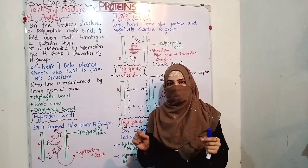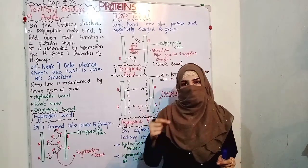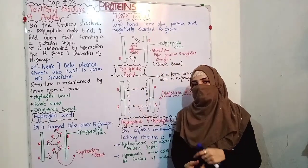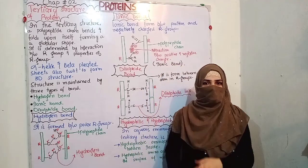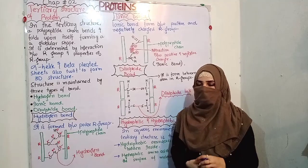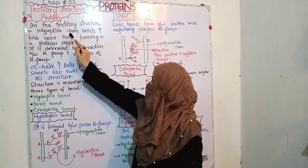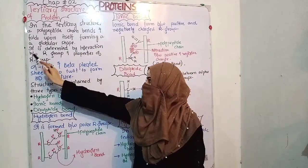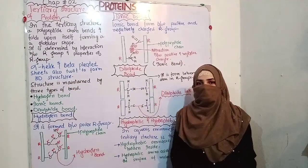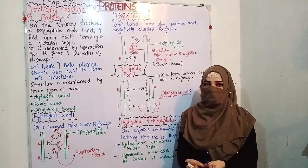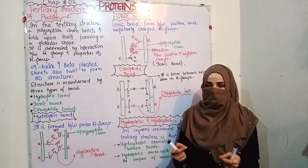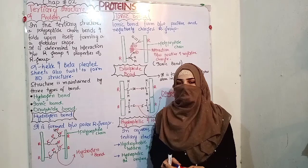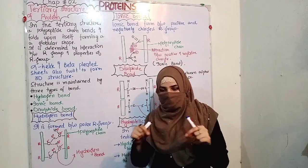In secondary structure, the primary chain — which is a polypeptide chain — is folded and curled into alpha helices and beta-pleated sheets. With the tertiary structure, it is determined by interactions between R groups and the properties of R groups. When the secondary structure of the protein is bent and folded, it forms a globular shape — a 3D structure of the protein.